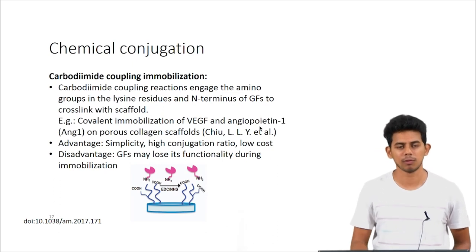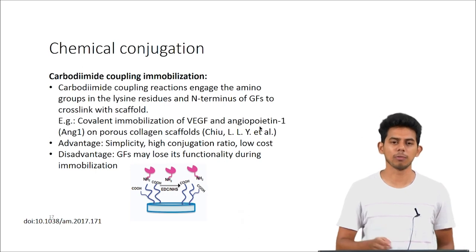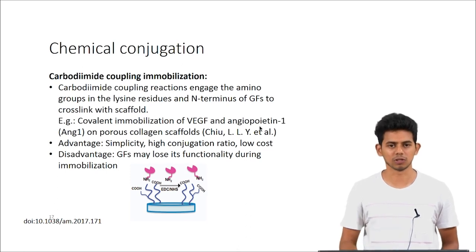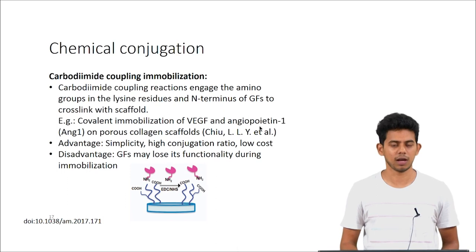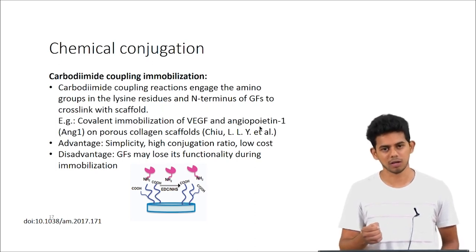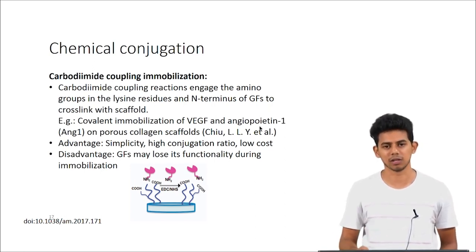Coming to chemical conjugation: one of the most commonly used techniques is carbodiimide coupling immobilization. Carbodiimide coupling involves cross-linking the growth factor to the scaffold, usually using a cross-linking agent. An example is covalent immobilization of VEGF and angiopoietin — two growth factors — on a porous collagen scaffold. The advantage is it is simple, with a very high conjugation ratio and low cost. The disadvantage is that during coupling, when you cross-link the growth factors onto the scaffold, they can lose functionality if their active sites are altered.